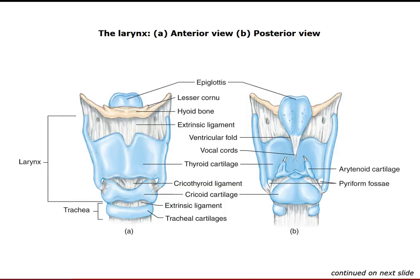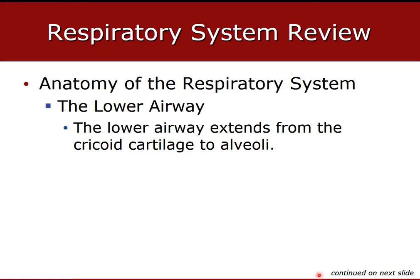The epiglottis is that leafy-like structure that hovers with a small ligament. When you swallow, it slams shut over the trachea to prevent food, water, and other particles from entering. When you breathe, the epiglottis lifts up allowing air to pass over the vocal cords, which produce sound.